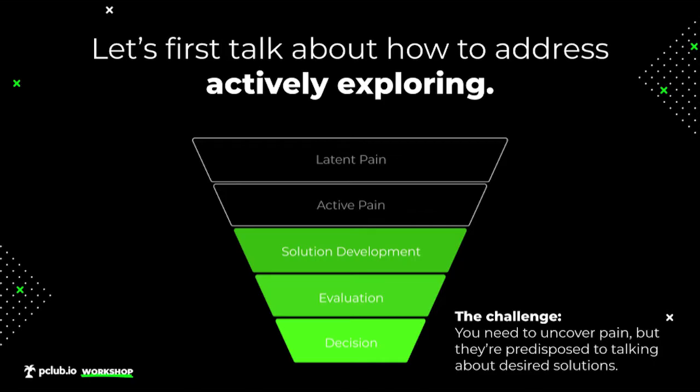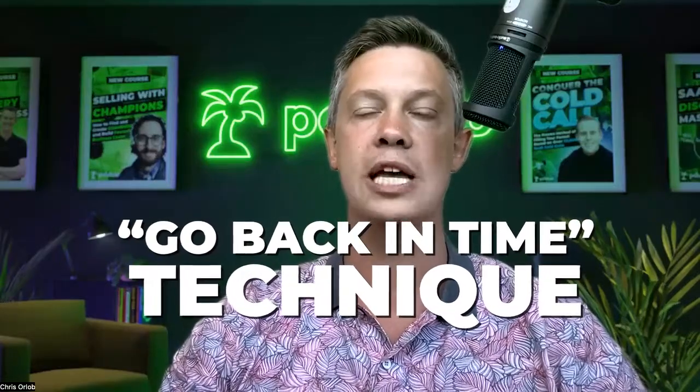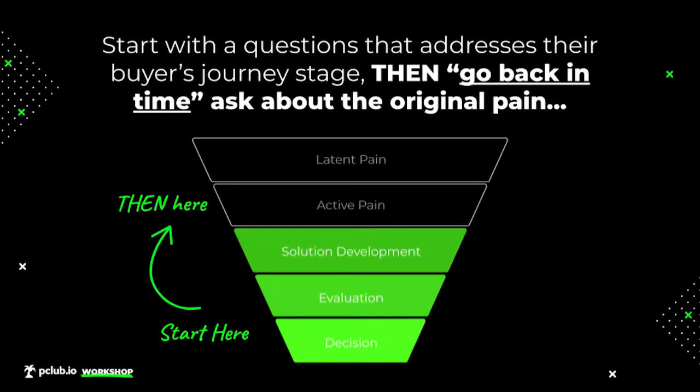In this episode we're going to talk about the second situation — how to deal with buyers who are actively exploring and likely want to see your product, but you need to peel back the onion and understand the pain. The challenge is: you need to uncover pain, but they're predisposed to talking about desired solutions. Enter the go back in time technique.